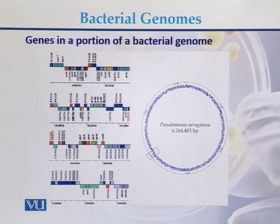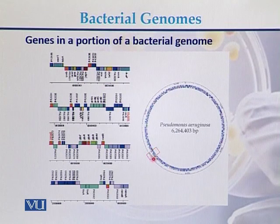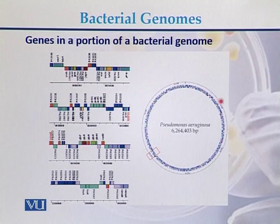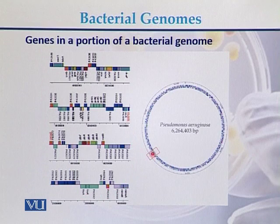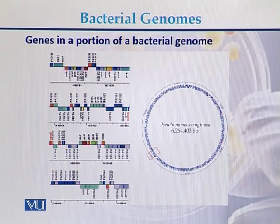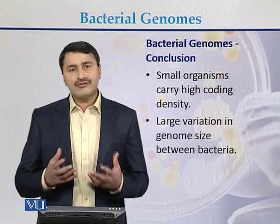This is a pictorial view of one bacterial genome. Here we can see a small portion of the genome of Pseudomonas, which has a circular DNA genome. In this small portion, we can see that all these genes are located within it, confirming that in the case of prokaryotes, most of the genome is coding.